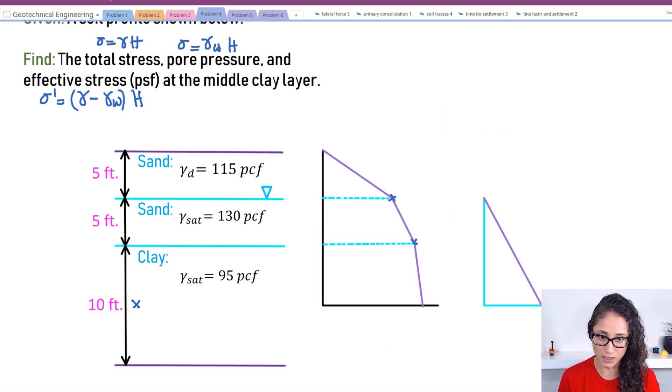So this is our pressure diagram. This one is for the total stress and this is for the pore pressure. Now to get the effective, like we said earlier, we're going to do total minus the pore pressure, which gives us the effective stress. Also note that I stopped here guys, because like we said, we want to know at the middle of the clay layer. So five feet, this height is only five feet.